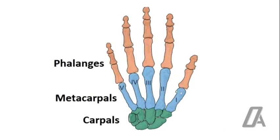Each hand-wrist area has 8 carpals, 5 metacarpals, and 14 phalanges, which make a total of 27 bones.